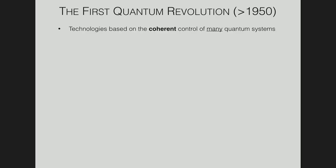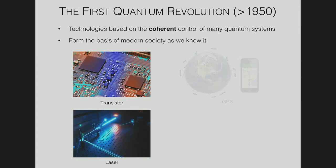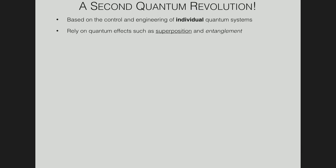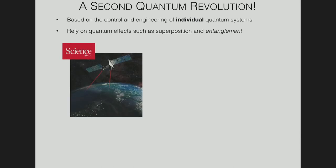Let me start by reminding you that the first quantum revolution, as people call it, refers to technologies we're all familiar with and use every day that are based on the coherent control of many quantum systems together. These form the basis of modern society: the transistor, the laser, GPS in all our phones, and MRI. The second quantum revolution, as the media and us now like to call it, is based on the control and engineering of individual quantum systems and uses uniquely quantum effects such as superposition, coherence, and entanglement.